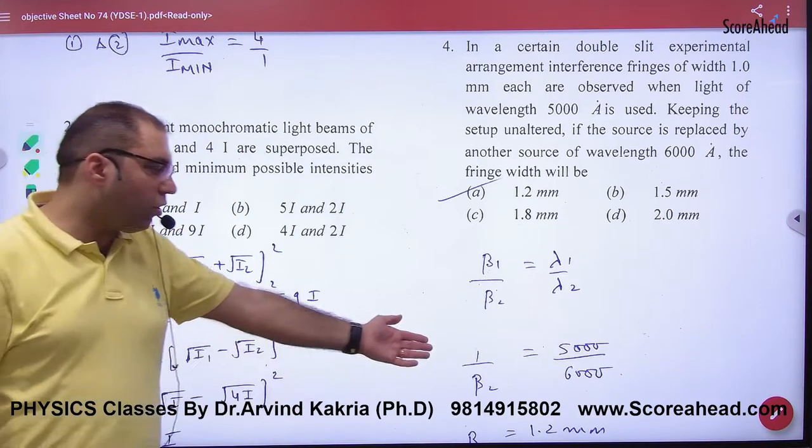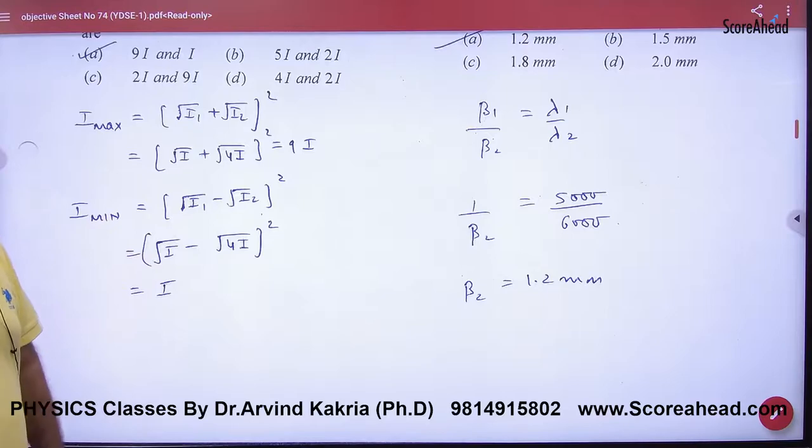Beta is proportional to lambda, so beta 1 by beta 2 is lambda 1 by lambda 2, because small d and big D value is the same. So solve it and we have to find beta 2 from here. Beta 2 can be calculated. The answer is coming here.